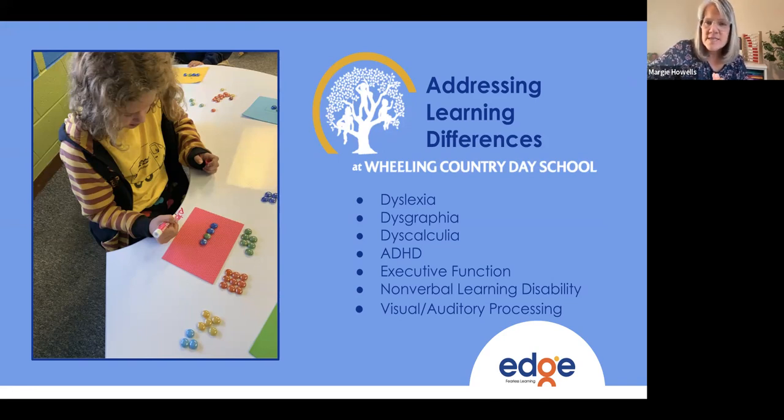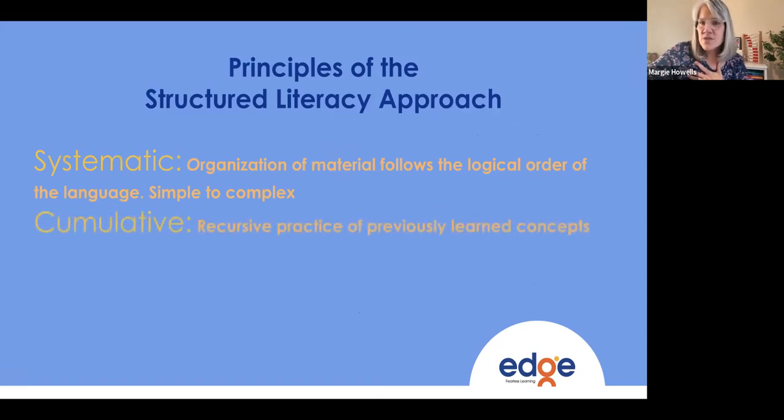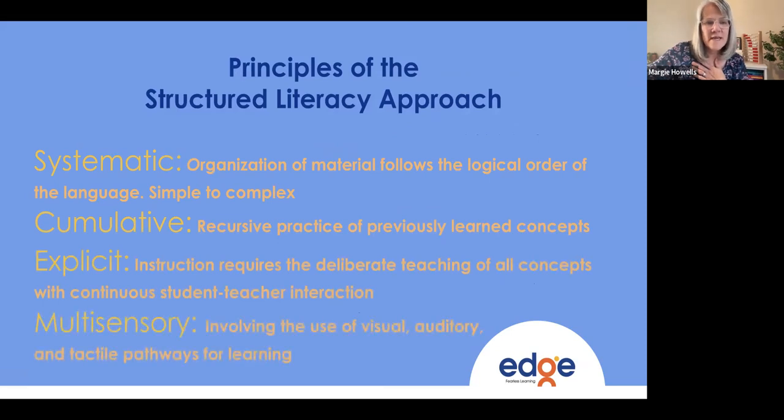Several years ago, we started noticing lots of struggling learners coming through our school, and subsequently we started the Center for Multisensory Learning. We called it the CML. The CML addressed learning differences of students. For the most part though, the CML focused on students with dyslexia or other reading-related disabilities. The CML and its staff use the Orton-Gillingham approach for structured literacy in working with their students. Orton-Gillingham is a structured literacy approach that's built on these four principles: it's systematic, cumulative, explicit in its instruction, and multisensory.